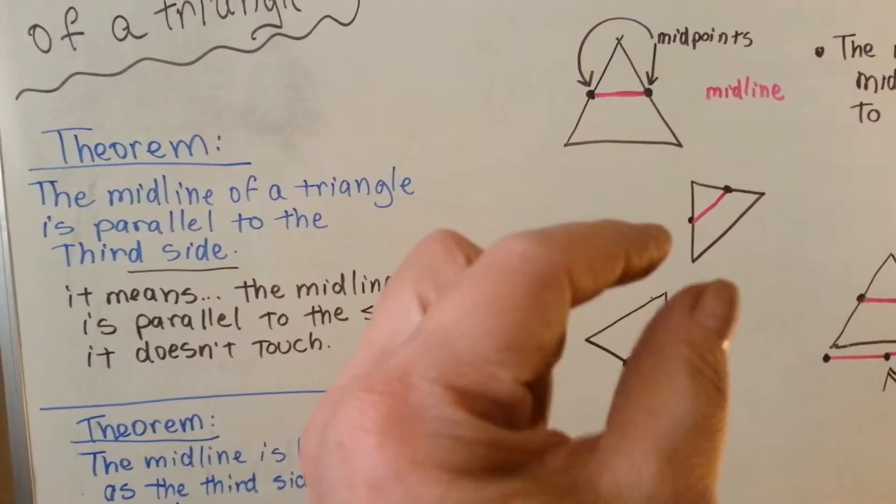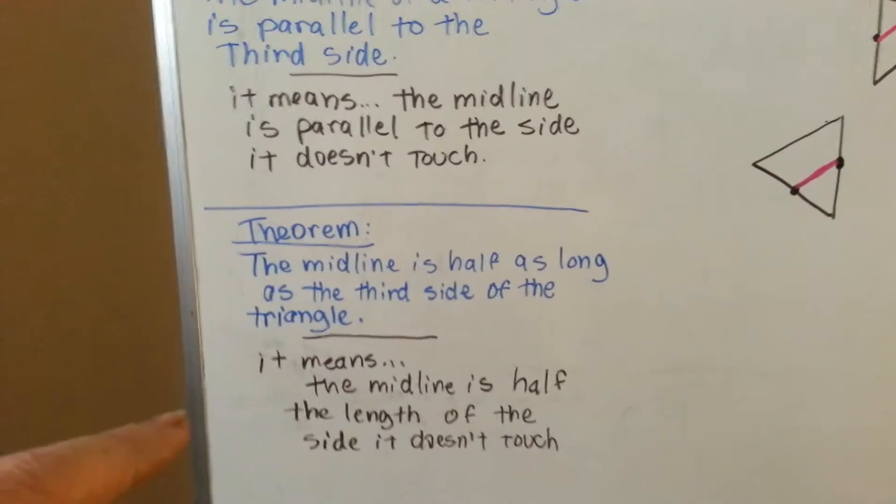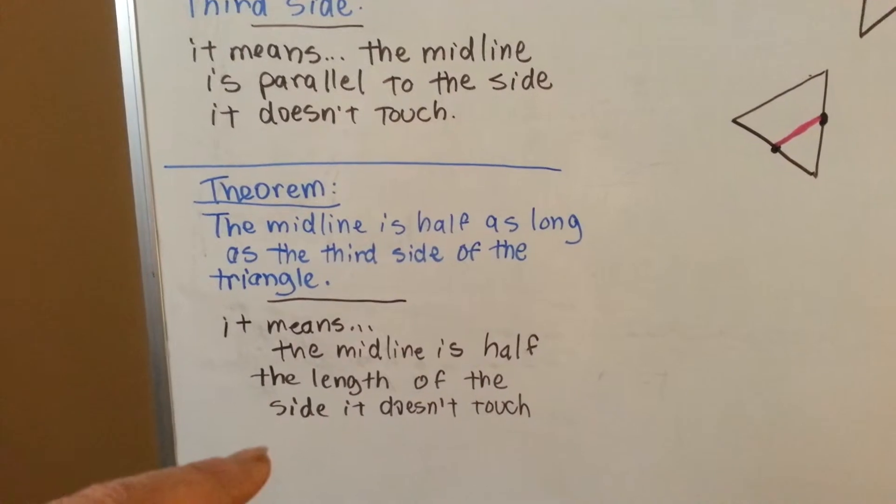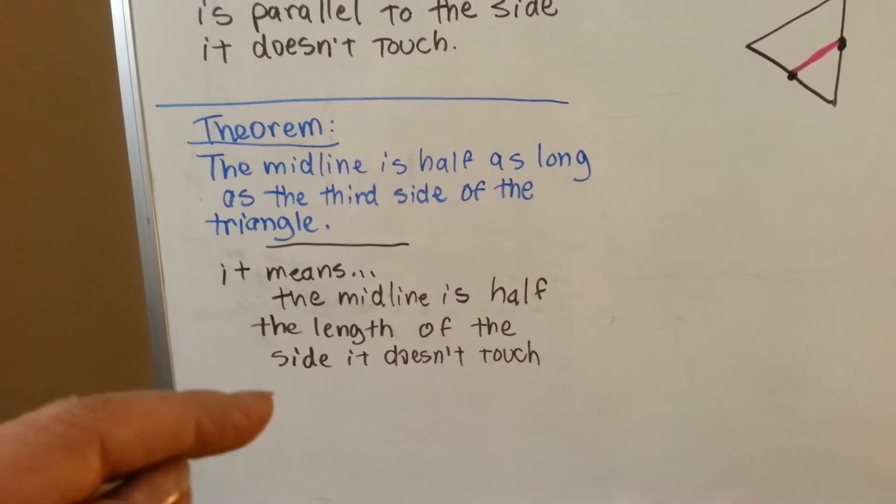You can see the two parallel lines there. Parallel lines, parallel lines. Here's the other theorem. The midline is half as long as the third side of the triangle. And that means the midline is half the length of the side it doesn't touch.